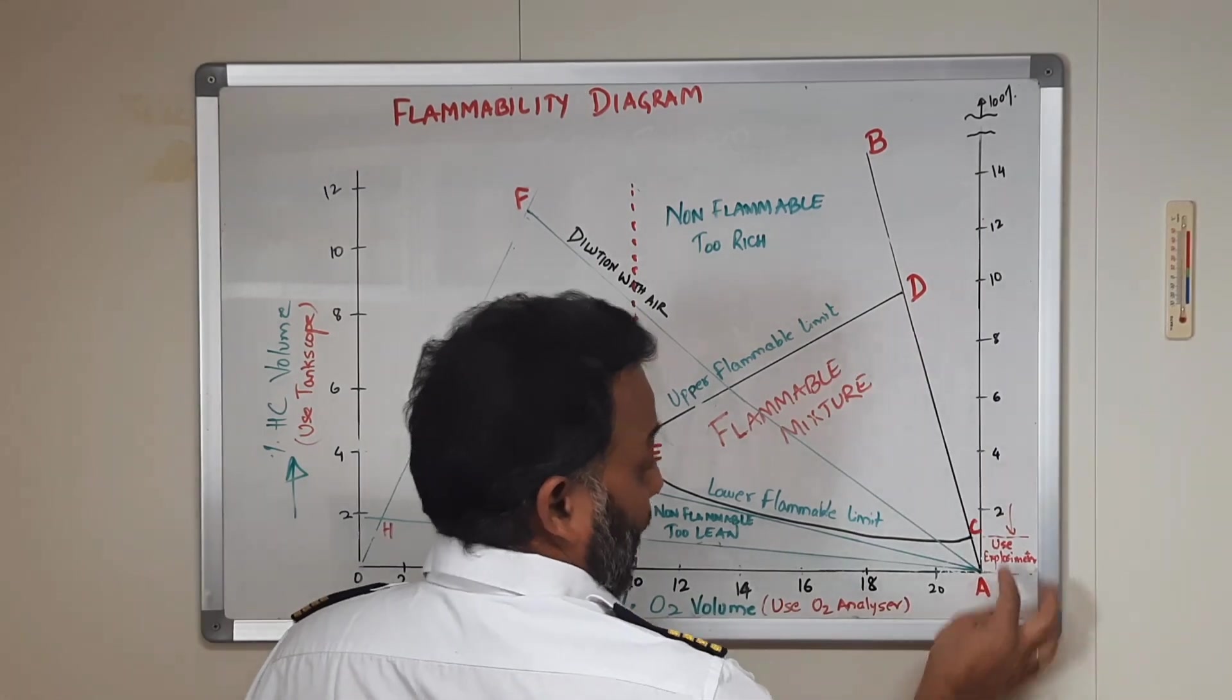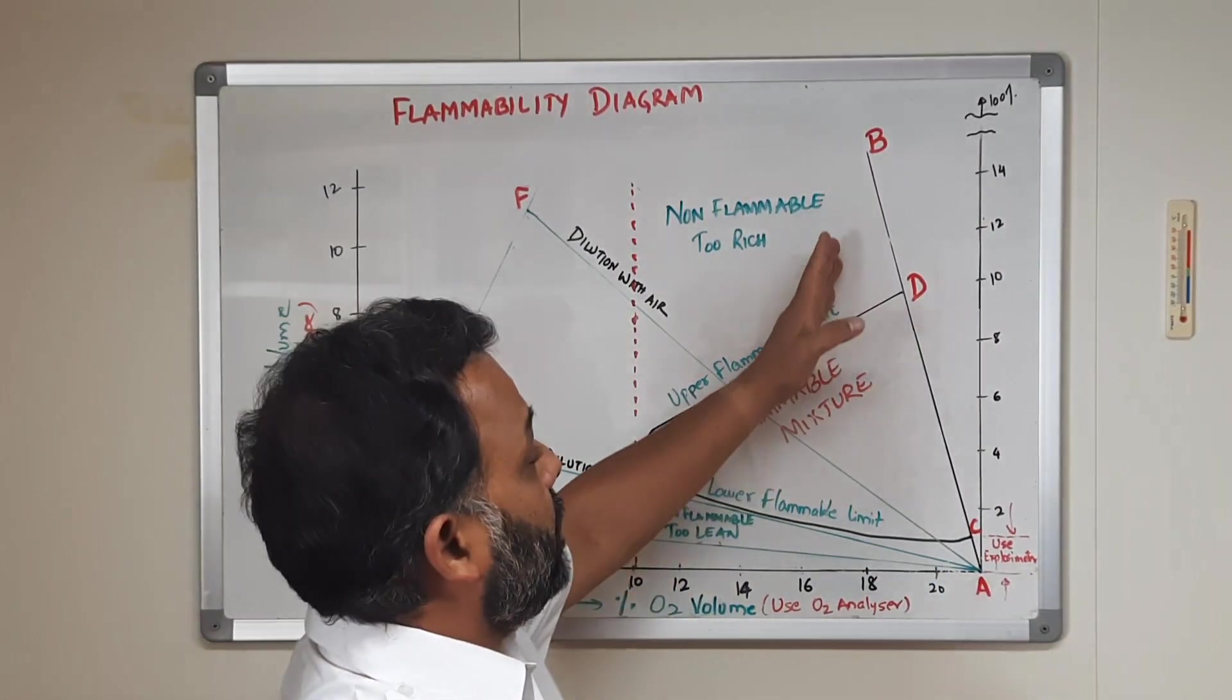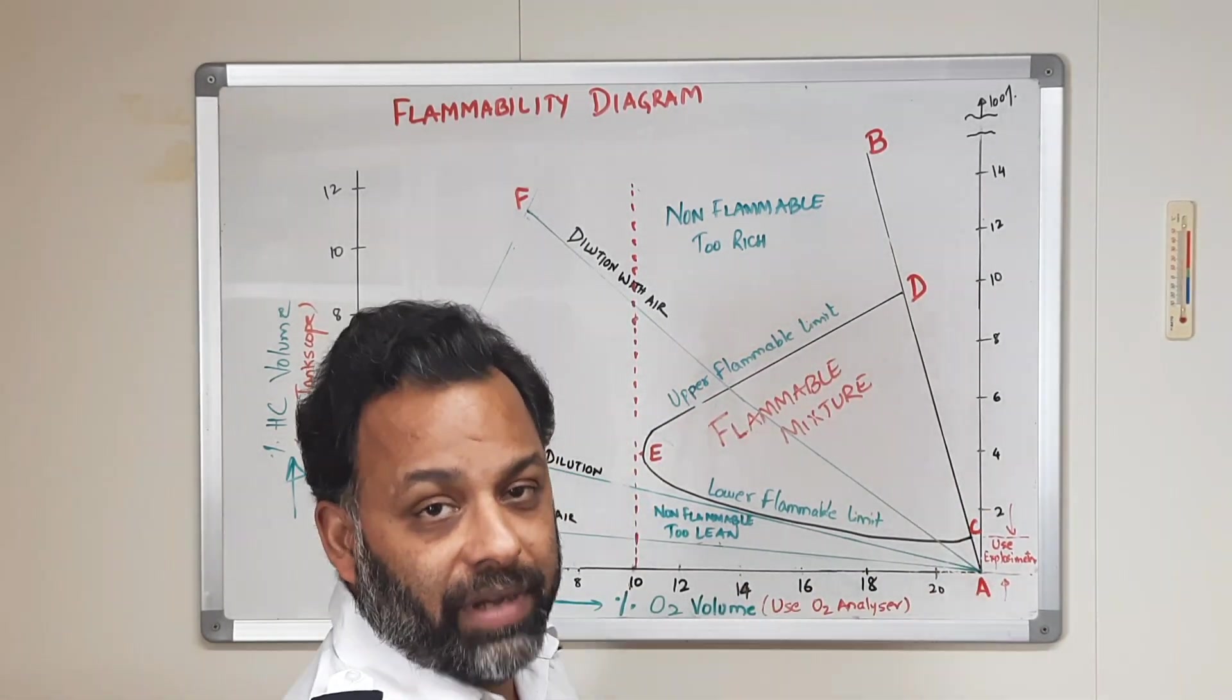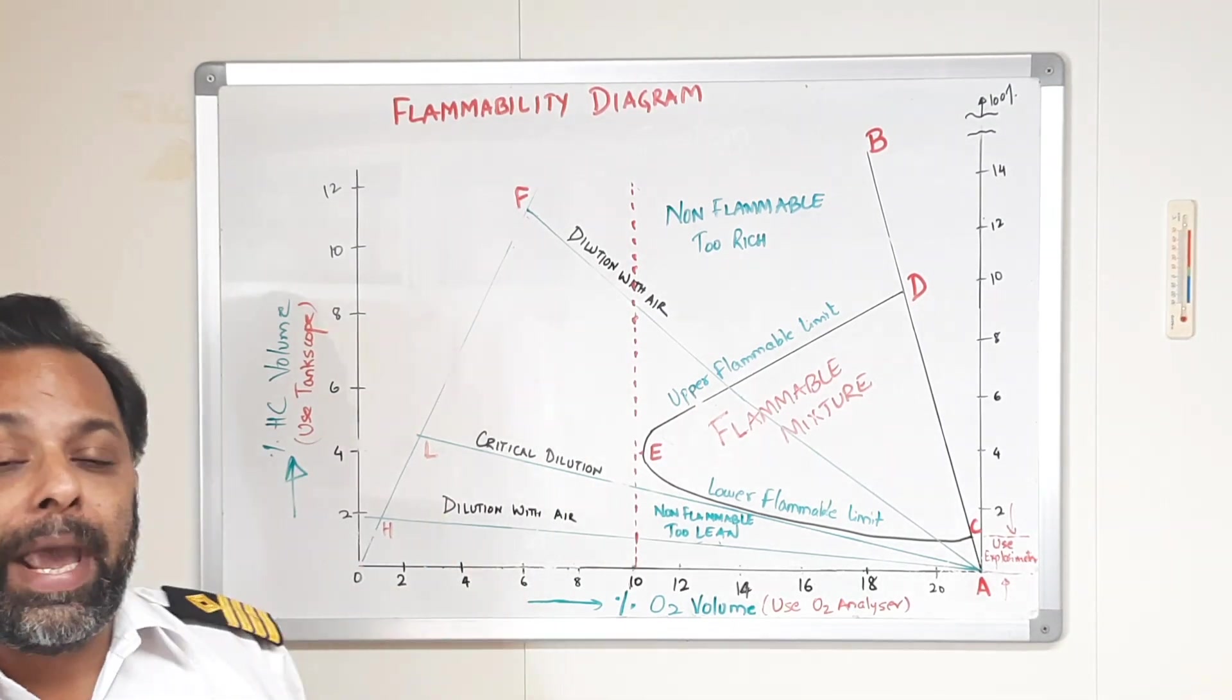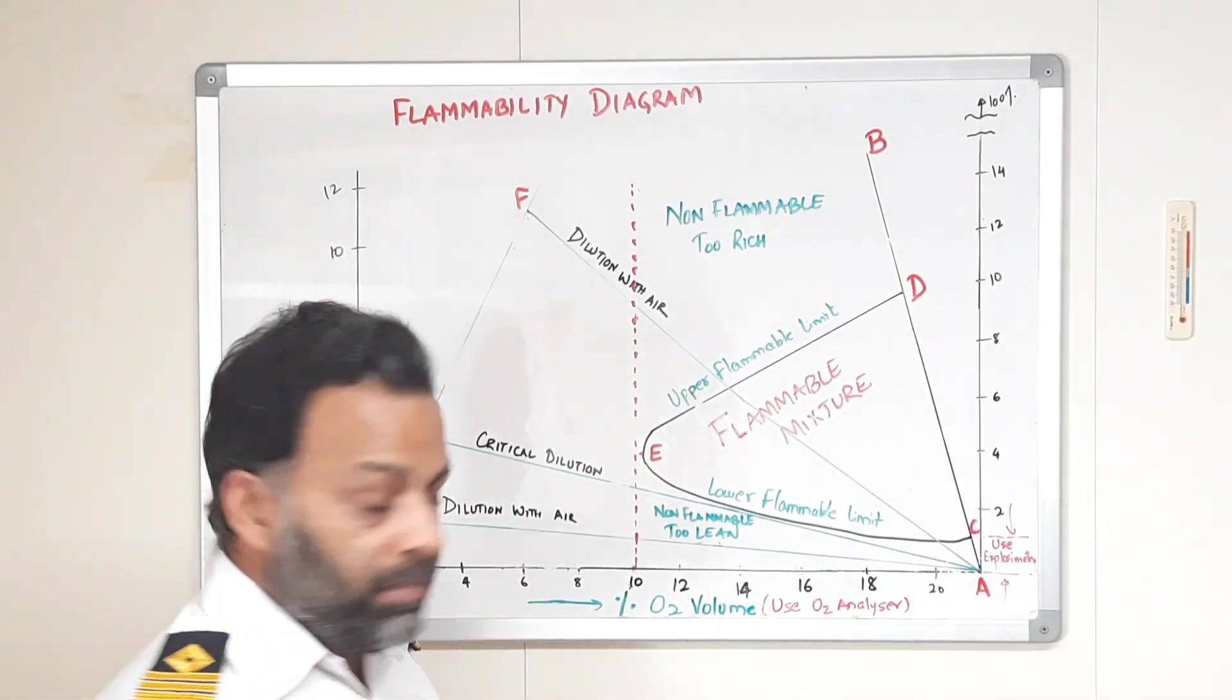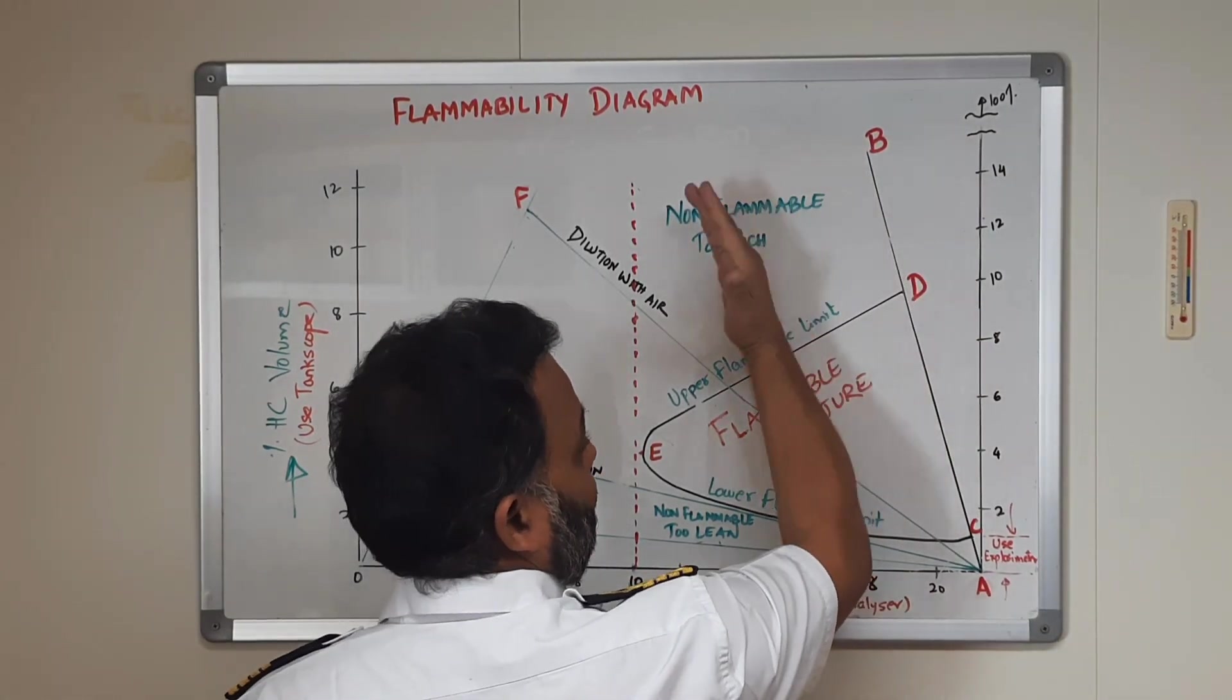Now, let's see, let's consider this line AB, which is a certain mixture of air and hydrocarbon, air is about 20.9% oxygen and rest is hydrocarbon mixture. As we introduce IG, inert gas into the system, this line will start to move on the left side.